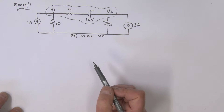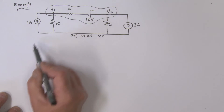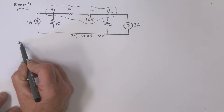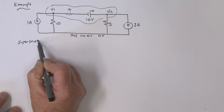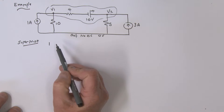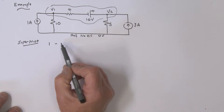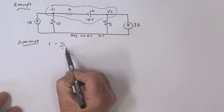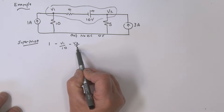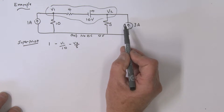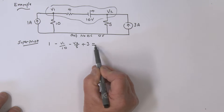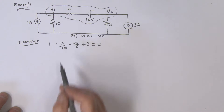Let's treat this whole thing as a supernode and write a node equation for it. For the supernode: we've got one amp going in, then we have a minus V1 divided by 10 coming out, on the other side a minus V2 divided by 5, and then a plus 3. All of that equals zero.